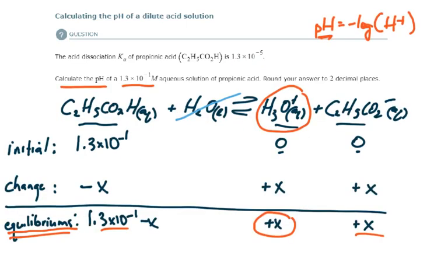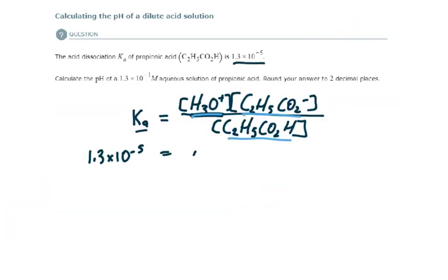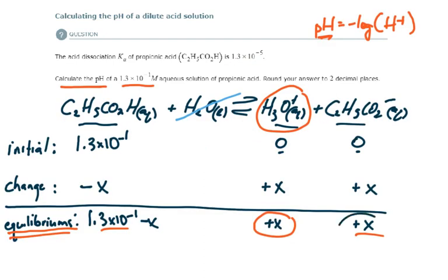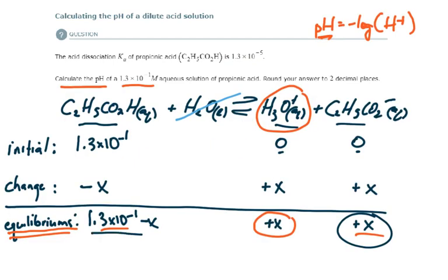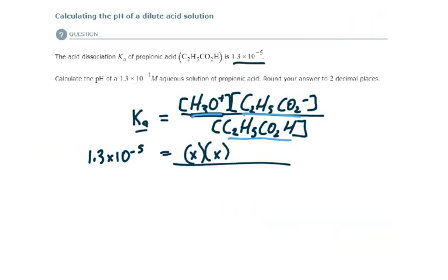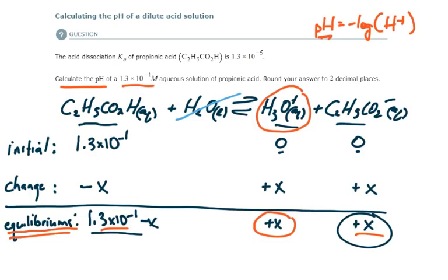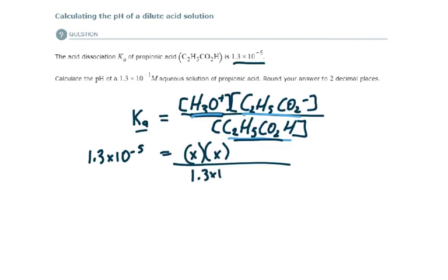So X is the concentration of hydronium at equilibrium. X is also the concentration of the conjugate base at equilibrium. And 1.3 times 10 to the minus 1 minus X is the concentration of propionic acid at equilibrium. So 1.3 times 10 to the minus 1 minus X.